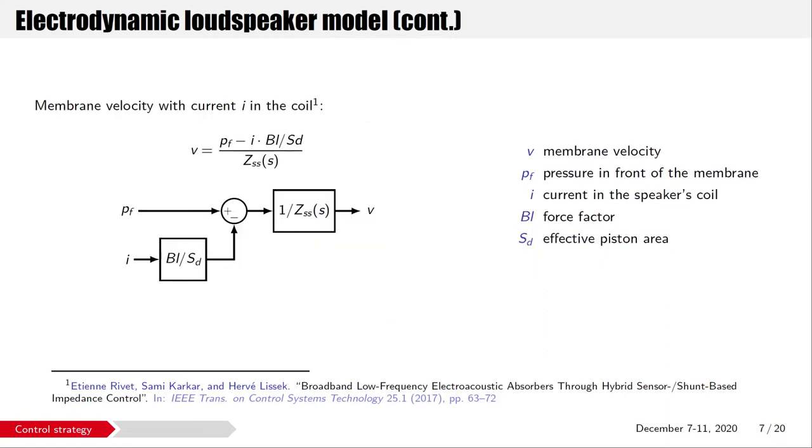A current I flowing in the coil results in a Lorentz force, minus Bl times I, that acts on the membrane. However, another force due to the front pressure, p_f times S_d, also acts on the membrane. The sum of these two forces divided by the effective piston area and the specific impedance results in the membrane velocity. We now have a two input, one output model of the speaker.